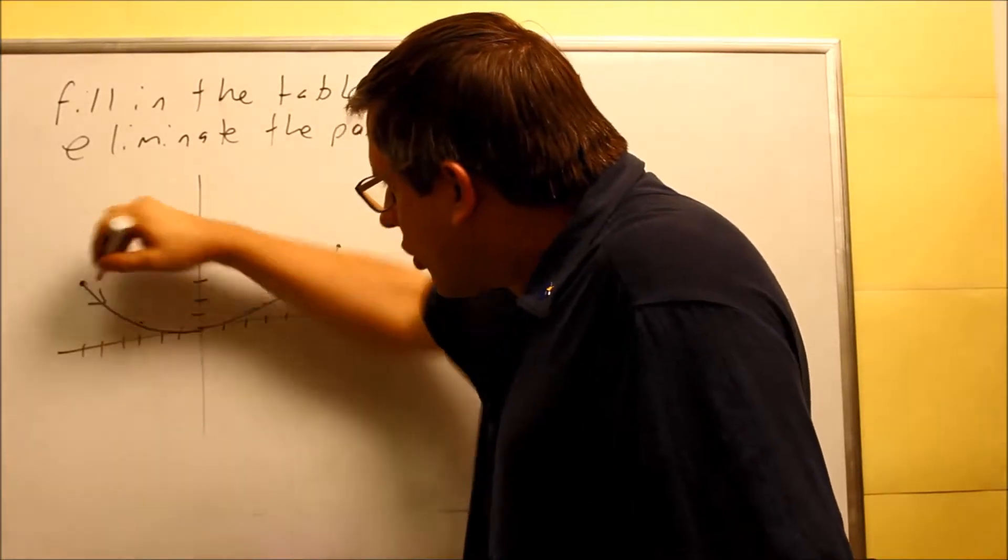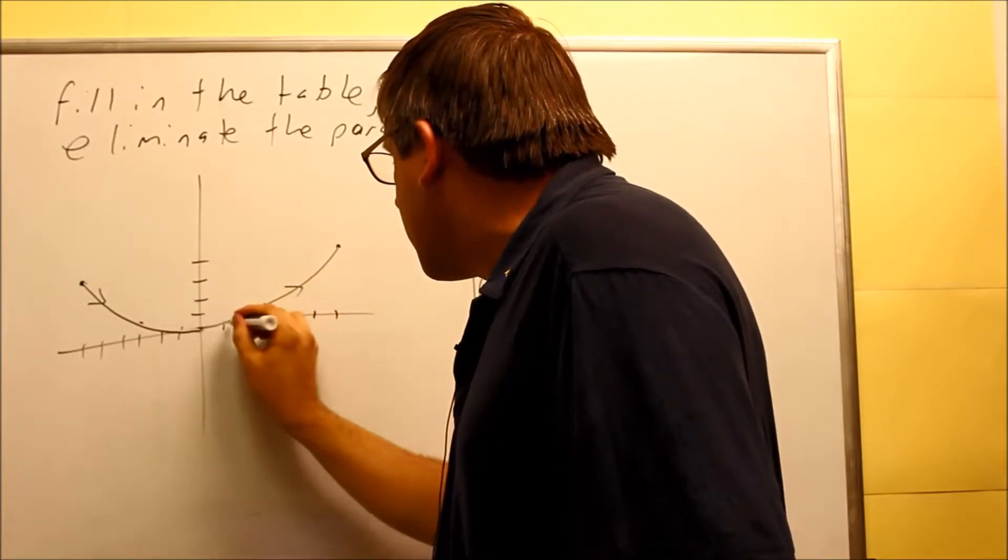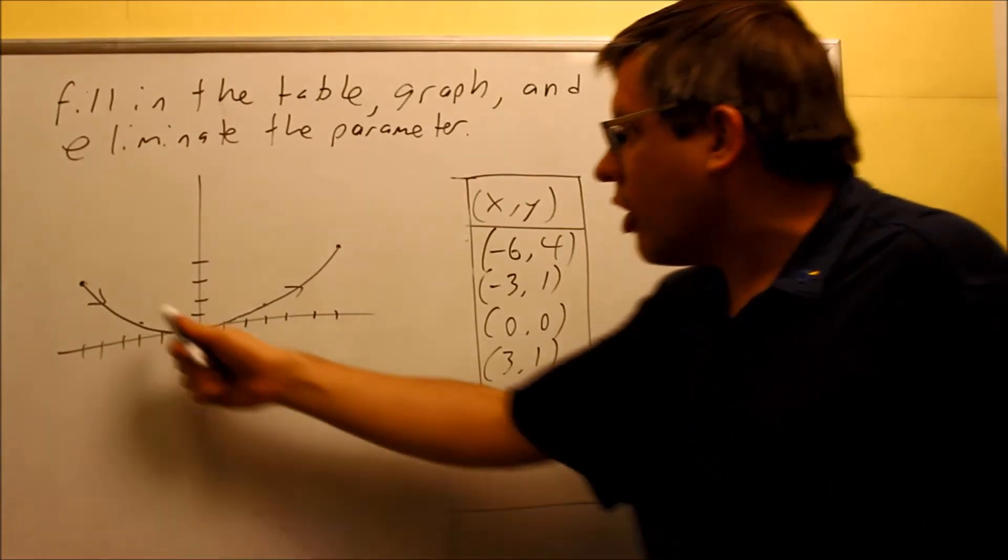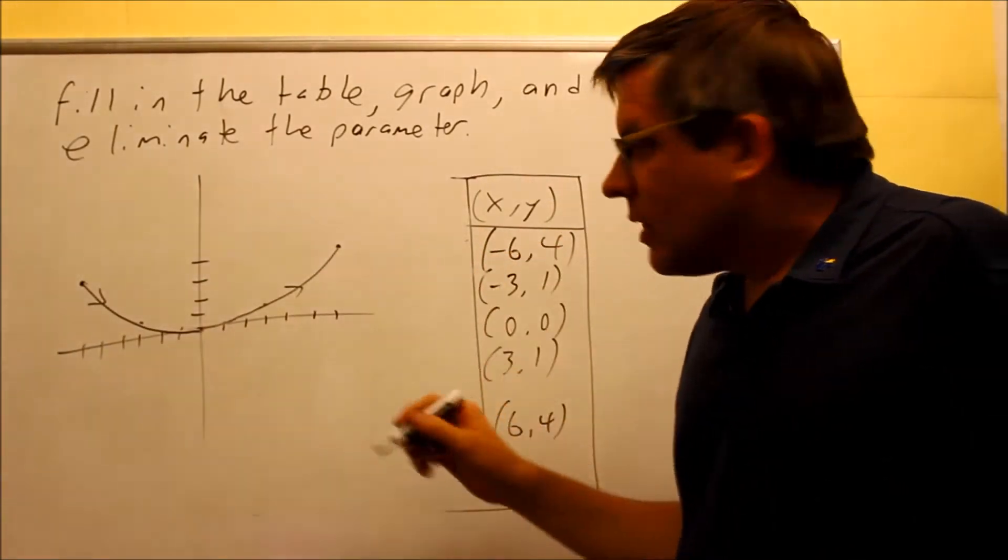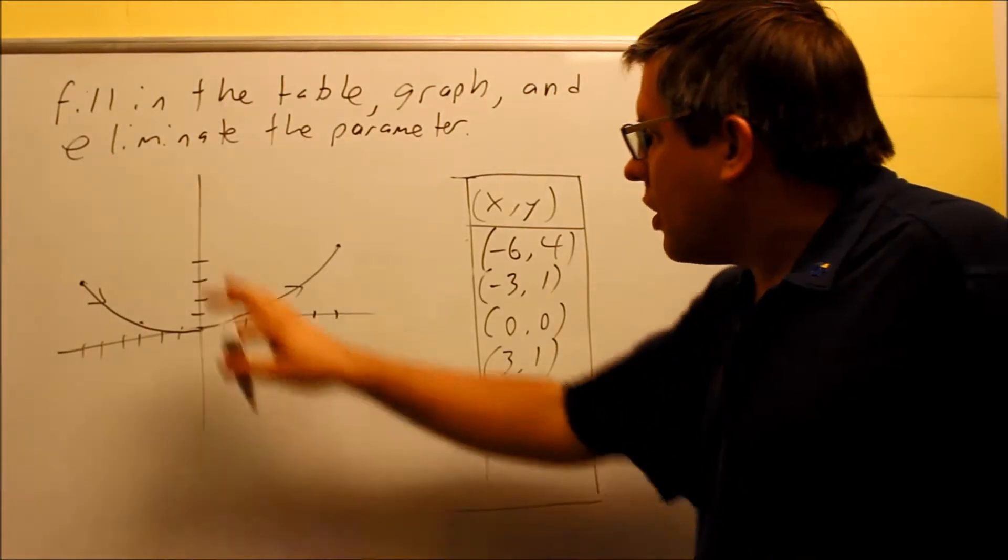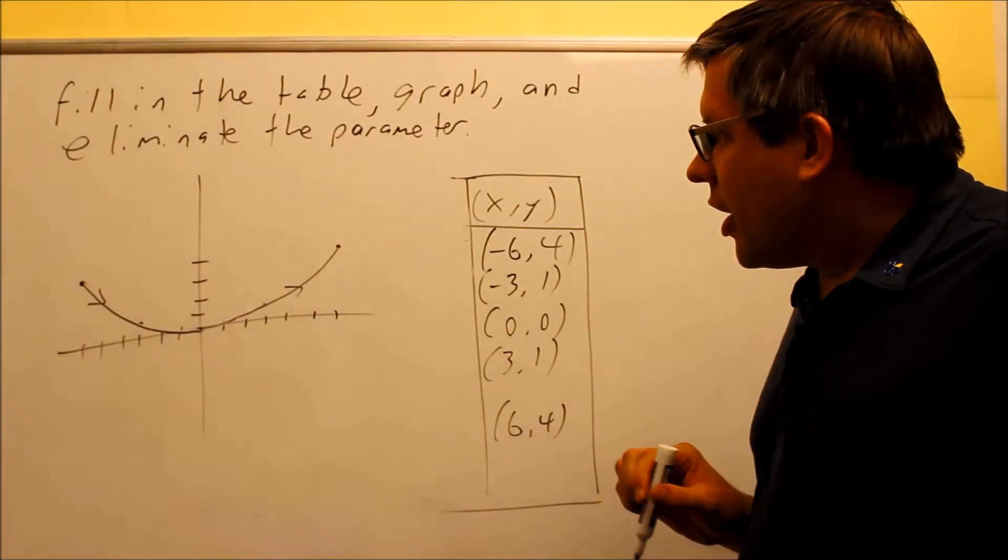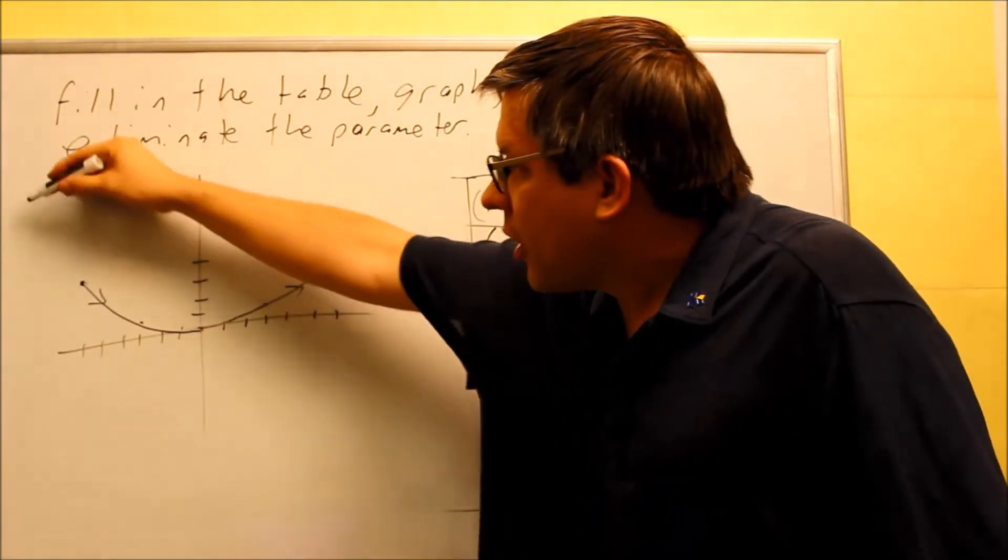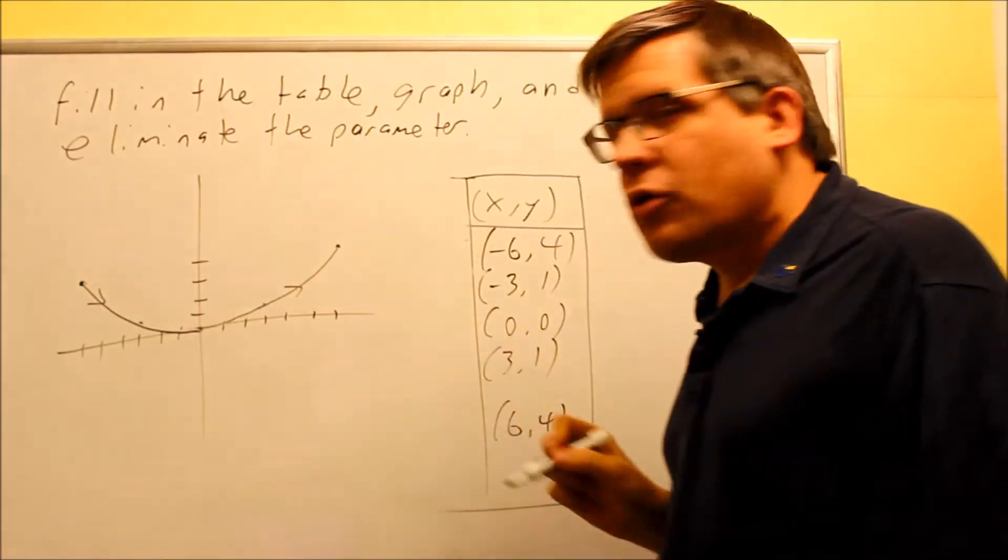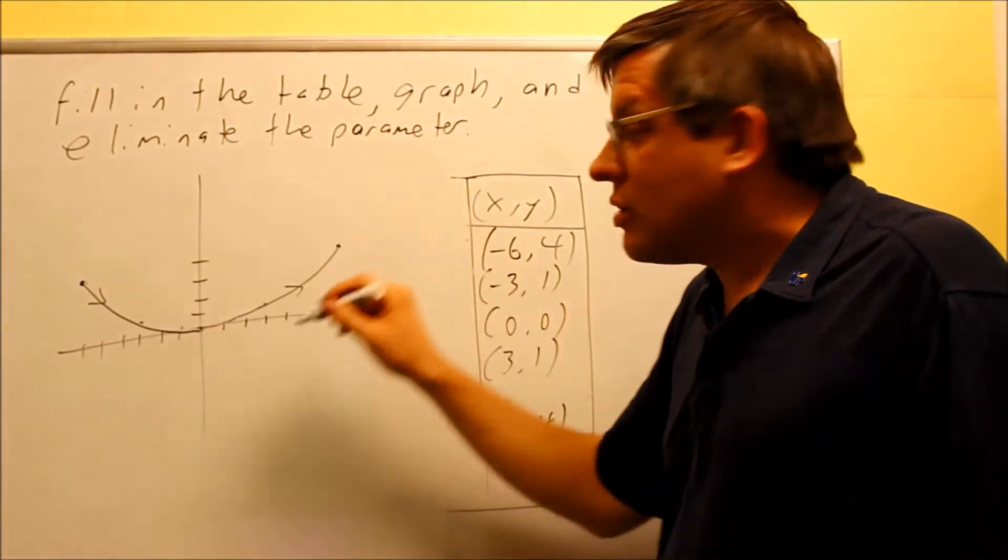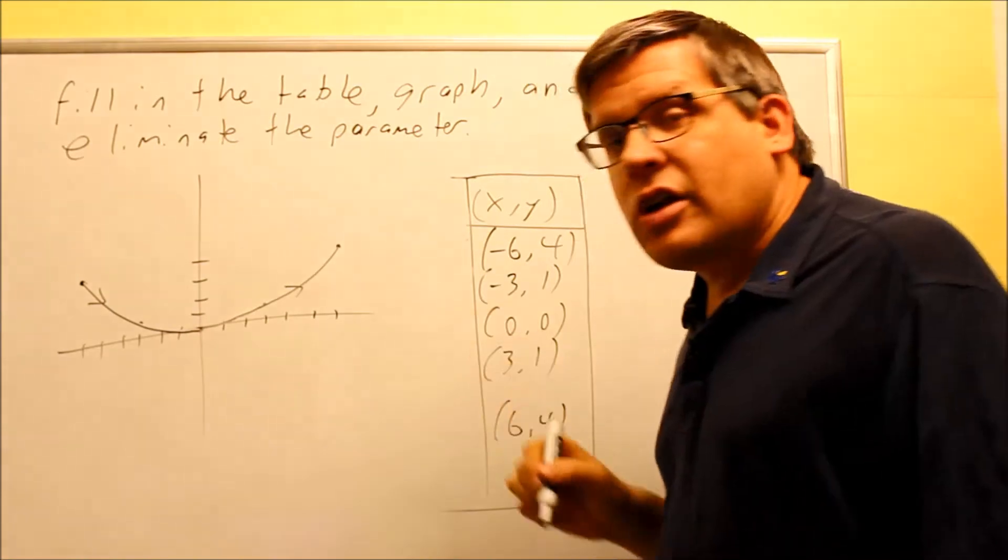You need to put little arrows on your graph whenever you're doing parametrics. You have to indicate which direction the point is moving from. So it's moving from left to right. And we have our arrows there to indicate that. So this would be our completed graph. Now, there's not going to be any more graph going this way. And there's not another part of the graph going that way. So I don't want to continue the graph in both directions. The graph actually starts here and ends here. We've got closed circles on each end.